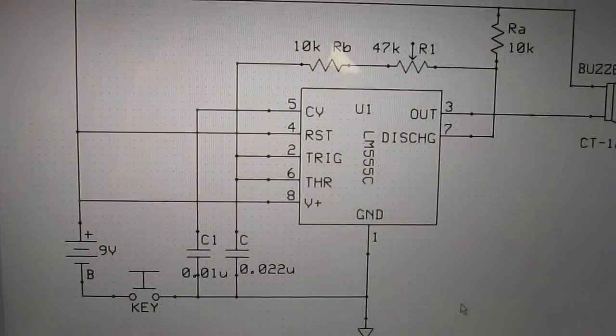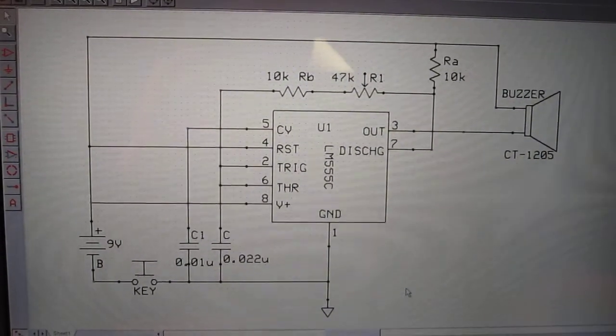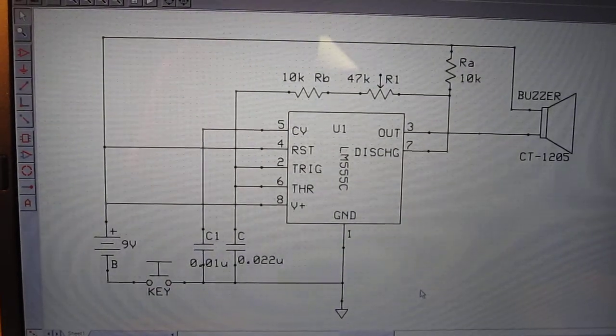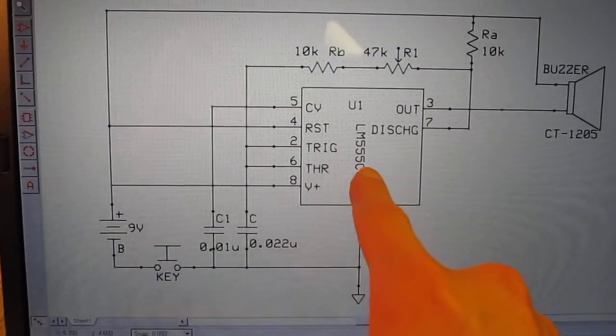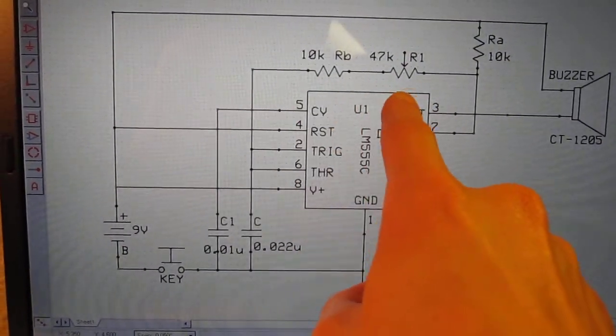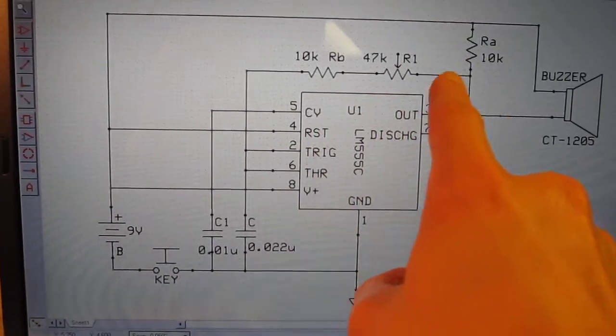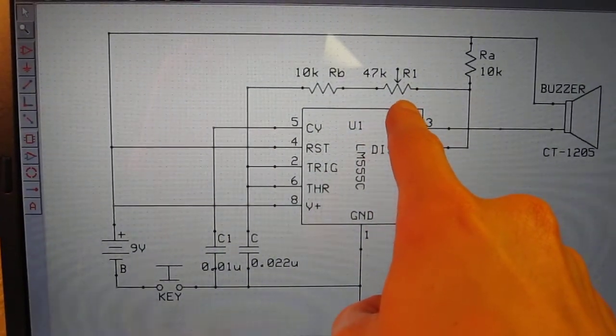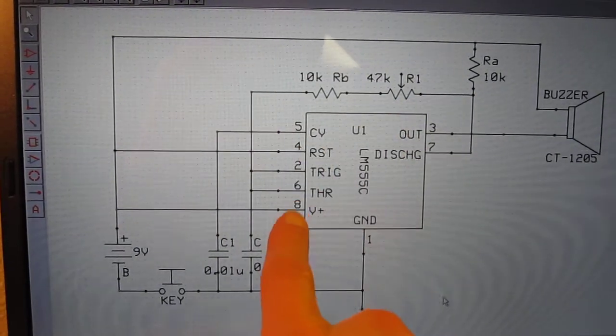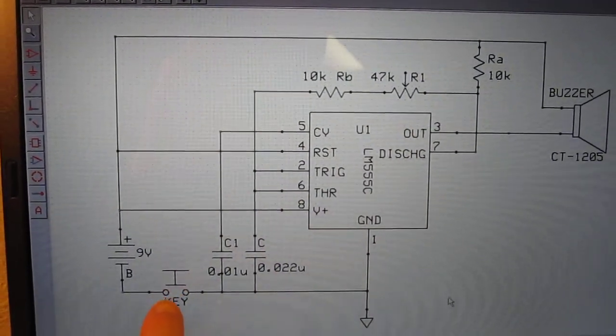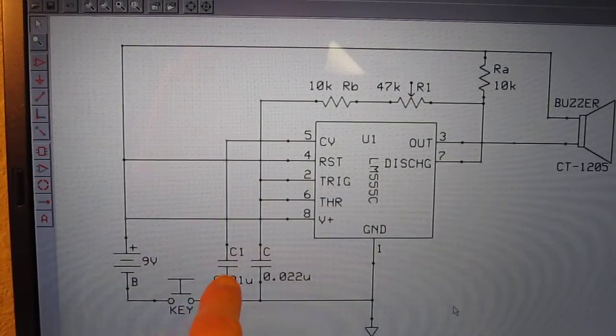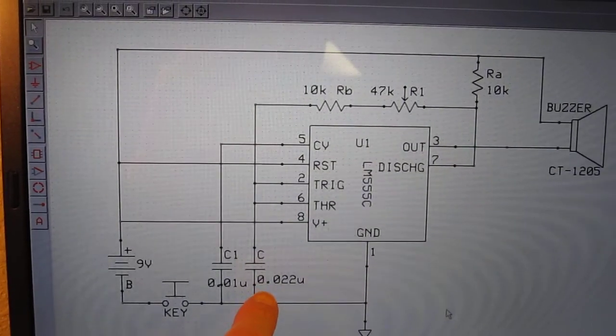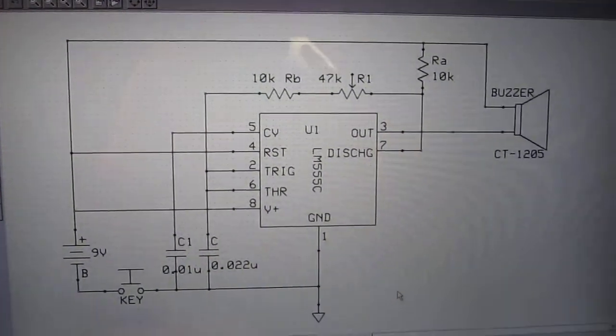So, this is my design. Instead of a speaker, I used a little buzzer. There's the 555 timer. We have these two groups of resistors that control the frequency. This is a pot I used to be able to adjust the tone. And here's the key, the 9 volt battery. This capacitor also affects the frequency.